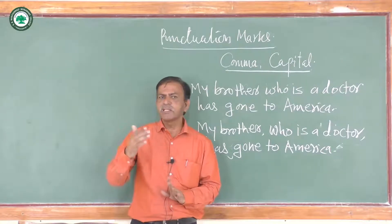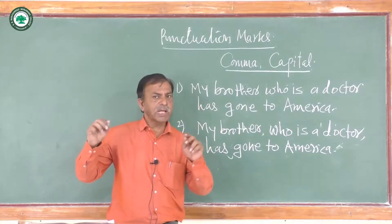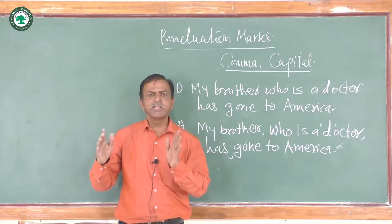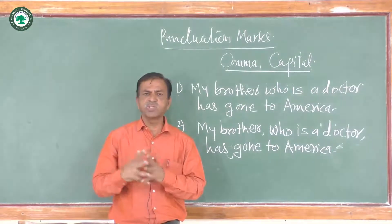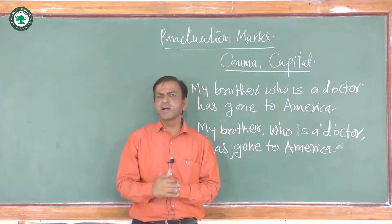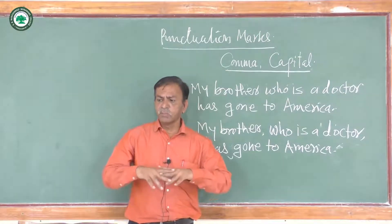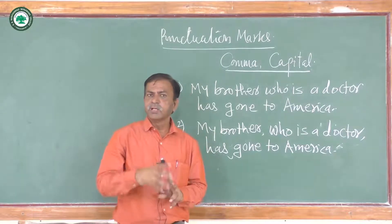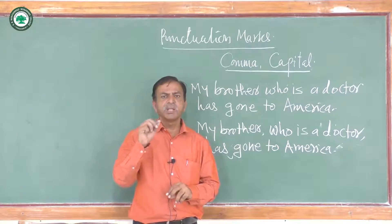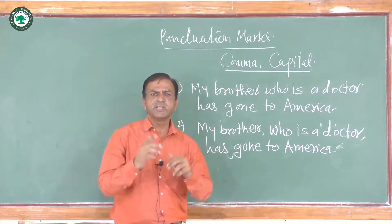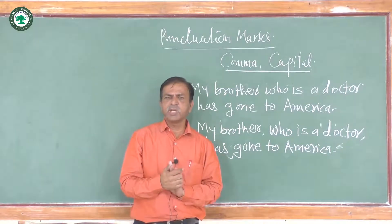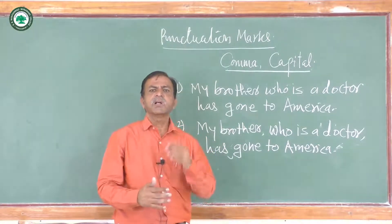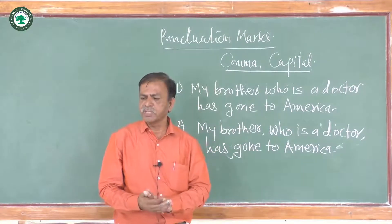For example: 'He works in Tata Motors.' So 'T' in Tata should be capital and 'M' in Motors should be capital, because it is the name of an industry. Or: 'Shikshan Sanstha is the biggest educational institution in the Asian continent.' Shikshan Sanstha should be written with capital letters, and 'Asia' — 'A' should be written in capital letter because Asia is a name of a continent.